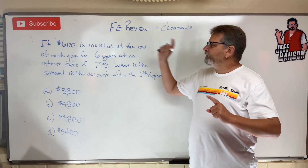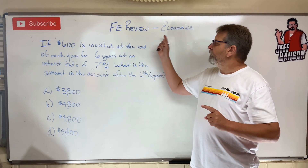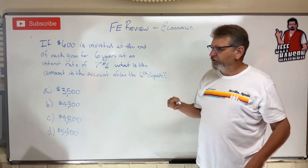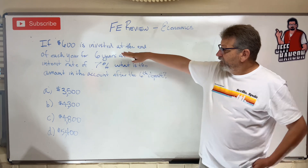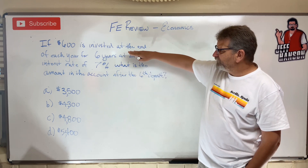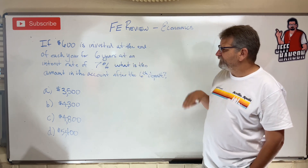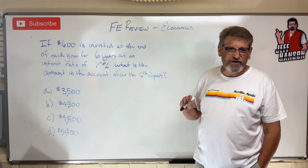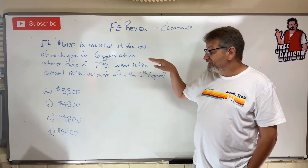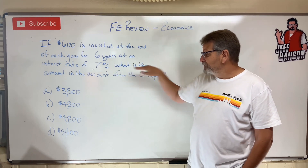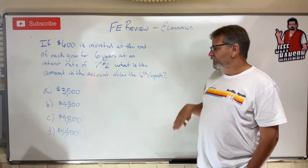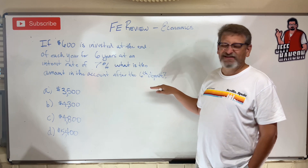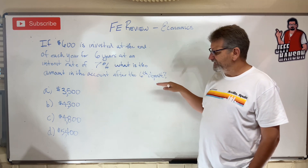Hey, welcome back! FEE review problem — another economics problem. If $600 is invested at the end of each year for six years at an interest rate of 7%, what is the amount in the account after the sixth deposit?